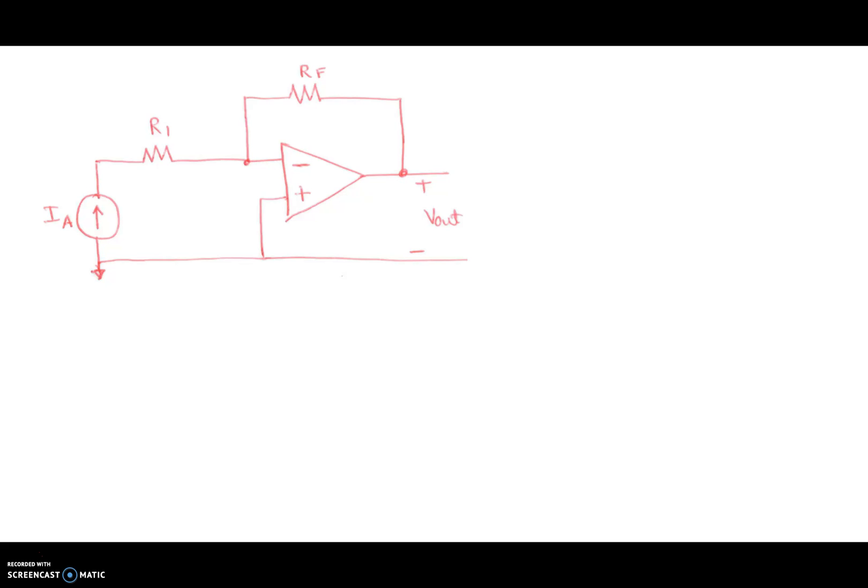Let's take a look at a second circuit topology right here. So in this particular circuit topology, there's a negative feedback right here through a resistor to the inverting end. There is an input resistance called R1. But unlike the inverting amplifier that we had looked at earlier, in this case, instead of the voltage source, there's a current source.